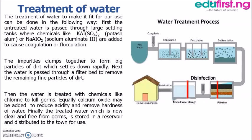Many of our sources of water have been contaminated with impurities from human factors, nature, and other sources. That is why it is necessary for us to treat our water before proper usage in our homes and anywhere else. Here we can see the water treatment process diagram showing how water is treated before we can use it at home.